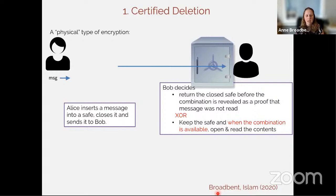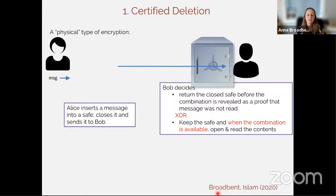When Bob gets the safe, he has a choice: he could return the closed safe to Alice before she ever reveals the combination. When Alice gets the closed safe back, she'll be convinced that Bob never opened it and therefore never read the message. Or he could keep the safe and when the combination is available, open it and read the contents. For some reason Alice will eventually broadcast the combination — this could be on purpose or due to eventual leakage, perhaps because the key is only computationally secure.